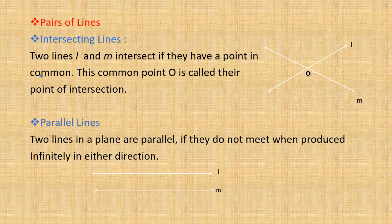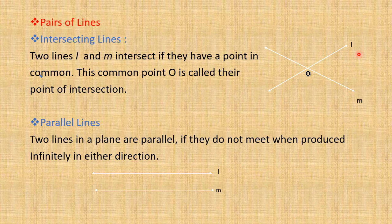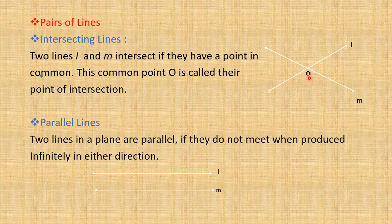Two lines L and M intersect if they have a point in common. This common point is always called their point of intersection. Here we have two lines, line L and line M. We use small letters for giving the names of lines, as you have already learnt in the previous standard. These two lines meet at this point and it is given the name O. So, we can say O is the point of intersection of these lines.